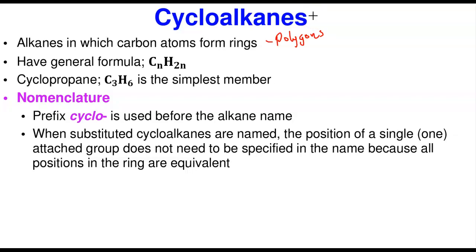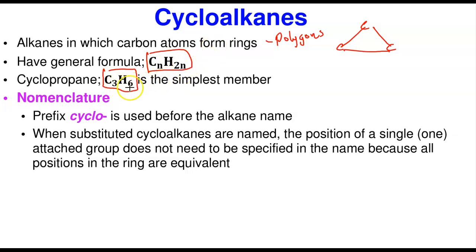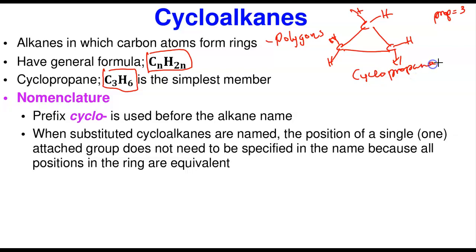The smallest cycloalkane is cyclopropane, which has three carbons joined together. The general formula is CₙH₂ₙ, where n is the number of carbons. So for cyclopropane: 2 times 3 gives 6 hydrogens, giving us C₃H₆. 'Prop' means three in the root. Each carbon satisfies its four bonds, resulting in six hydrogens. Cyclopropane is the simplest member.